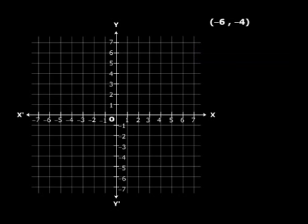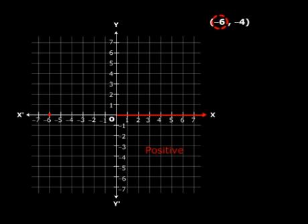Now we come back to minus 6 comma minus 4. The first thing we do is we move 6 units on O, x-dash. Why O, x-dash and not O, x? Because it is minus 6, right? So if it is minus, you move leftwards on the x-axis, and if it is plus, you move towards O, x. So here it is minus 6, so this is the important point — let's mark it as M.